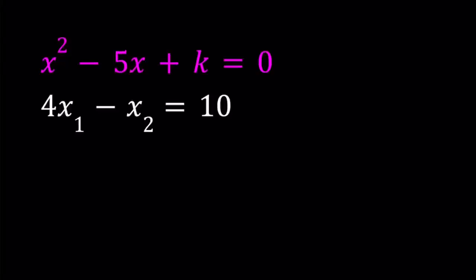Hello everyone. In this video, we're going to be dealing with a quadratic equation. We have x squared minus 5x plus k equals 0. k is a constant, and the roots of this equation are x sub 1 and x sub 2. We're also given the relationship 4 times x sub 1 minus x sub 2 equals 10. We're going to be looking for the k values, and I'll be presenting three methods.